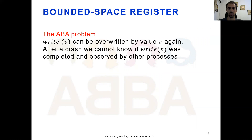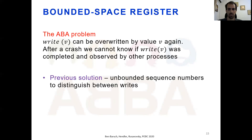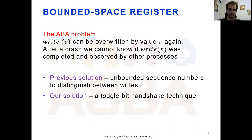The biggest challenge when designing a detectable register is the ABA problem. A write of value V by process P may later be overwritten. Therefore, if P crashes, it cannot tell whether its write was completed and observed by other processes by simply reading the content of the register. Previous work addressed this issue using unbounded sequence numbers, thus avoiding writing the same value twice. Our register implementation uses a toggle bit handshake technique to handle the ABA problem.